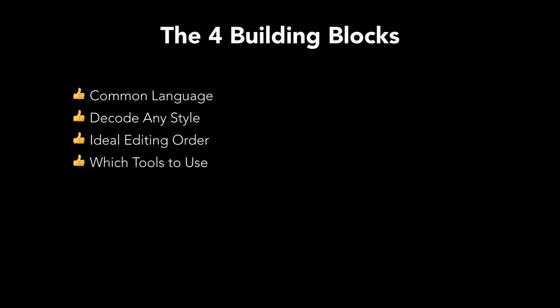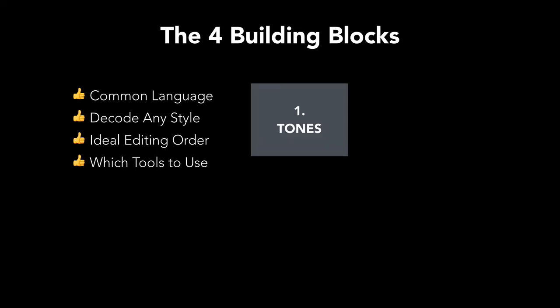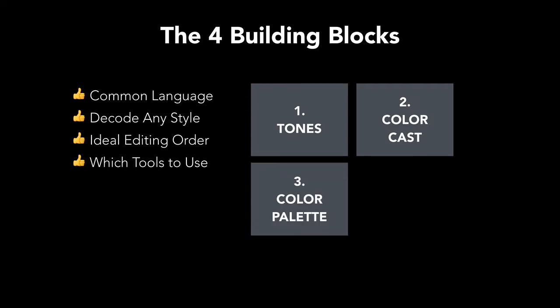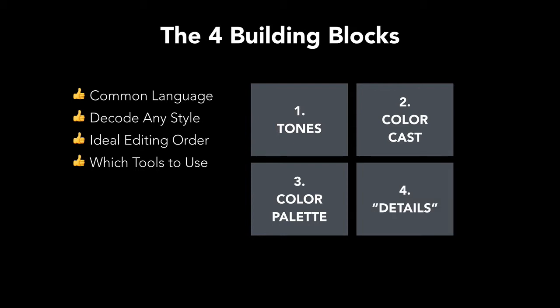So what are these four building blocks? The first is the tones, the second is the color cast, the third is the color palette, and the fourth is something that I just called the details. We're going to go through each of these, but these are the four building blocks of style and whether you're using Lightroom or Photoshop or any other thing to develop your photos, these are the four essential things that you have to understand.